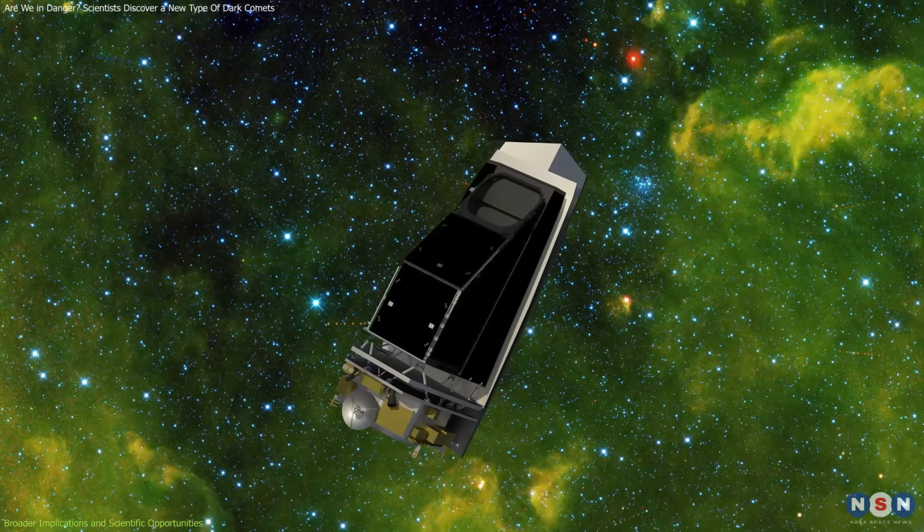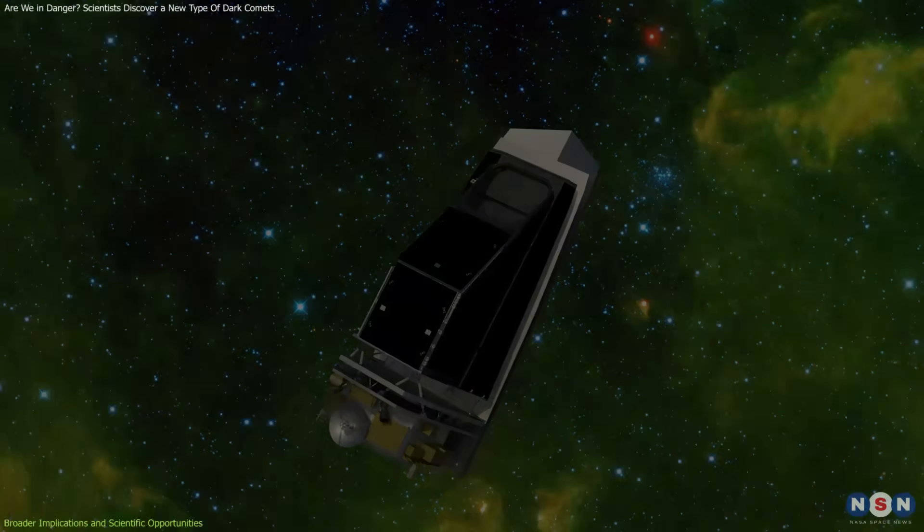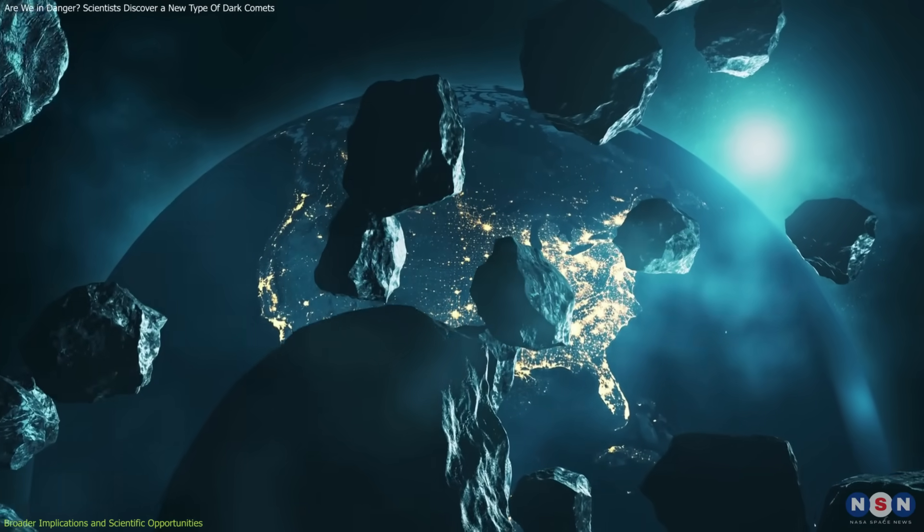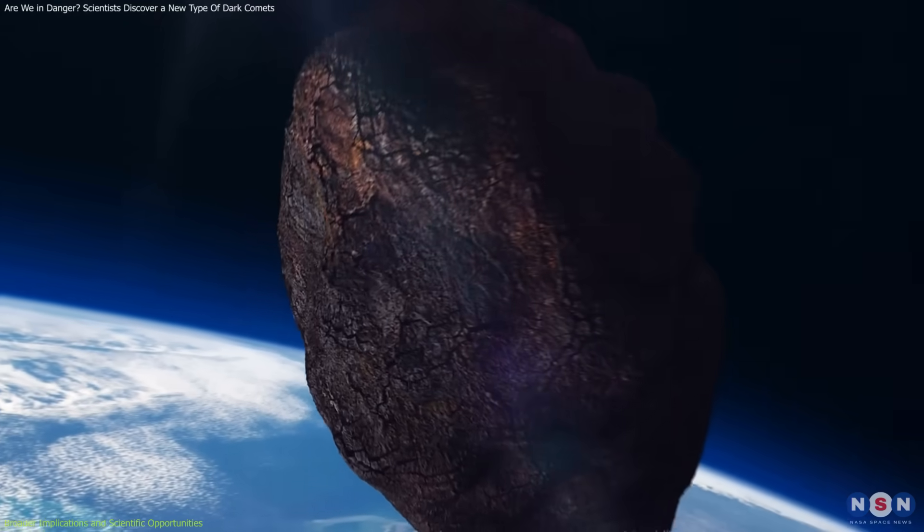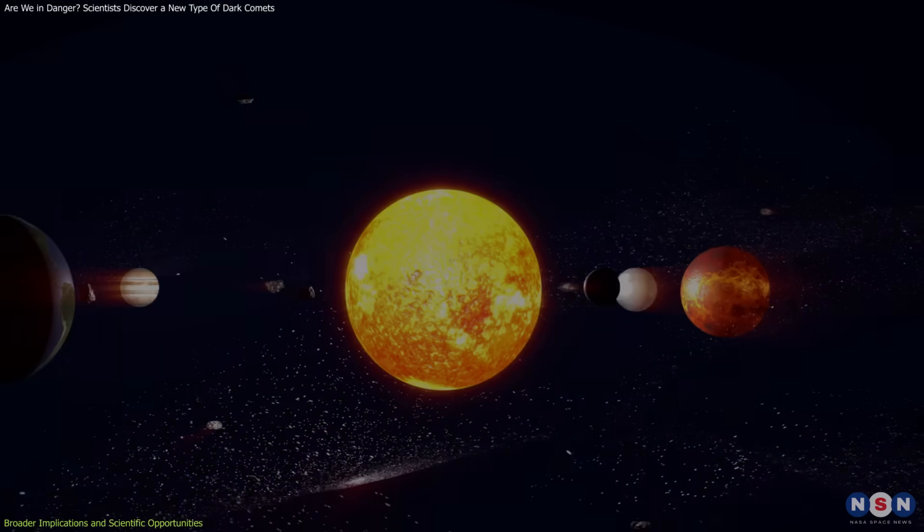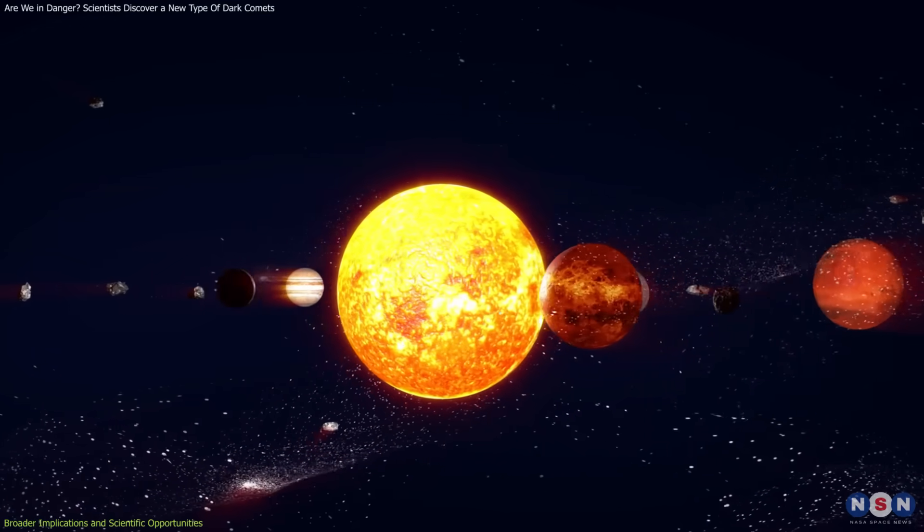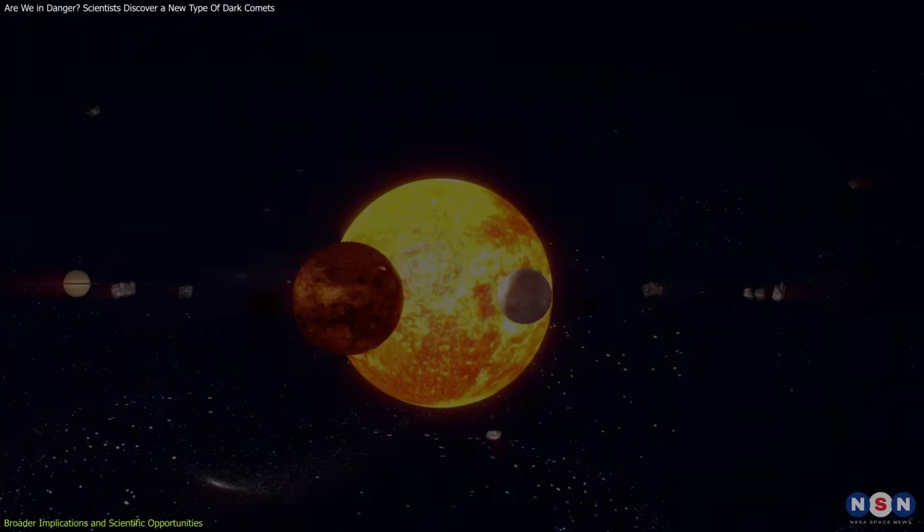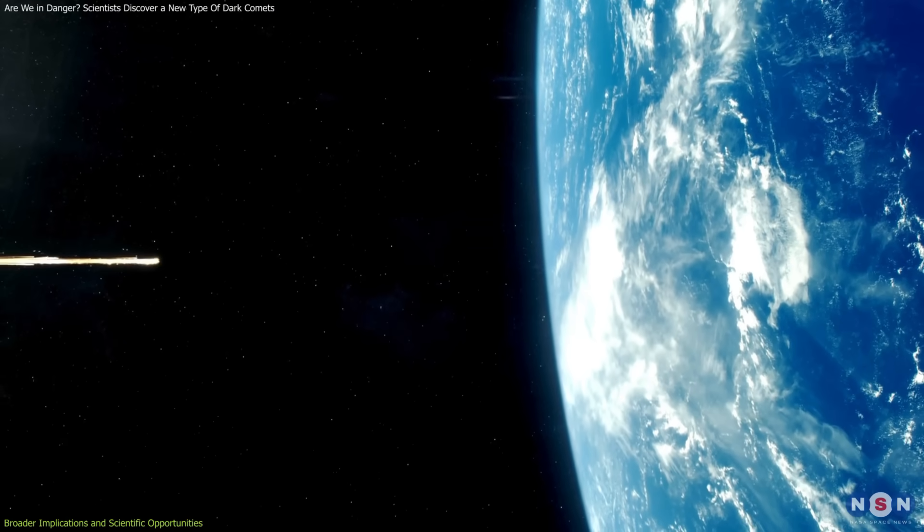Missions like NASA's Near-Earth Object Surveyor could help identify and study these objects in greater detail. By understanding their composition and behavior, we can gain insights into the processes that shape the solar system and potentially influence the emergence of life on Earth.